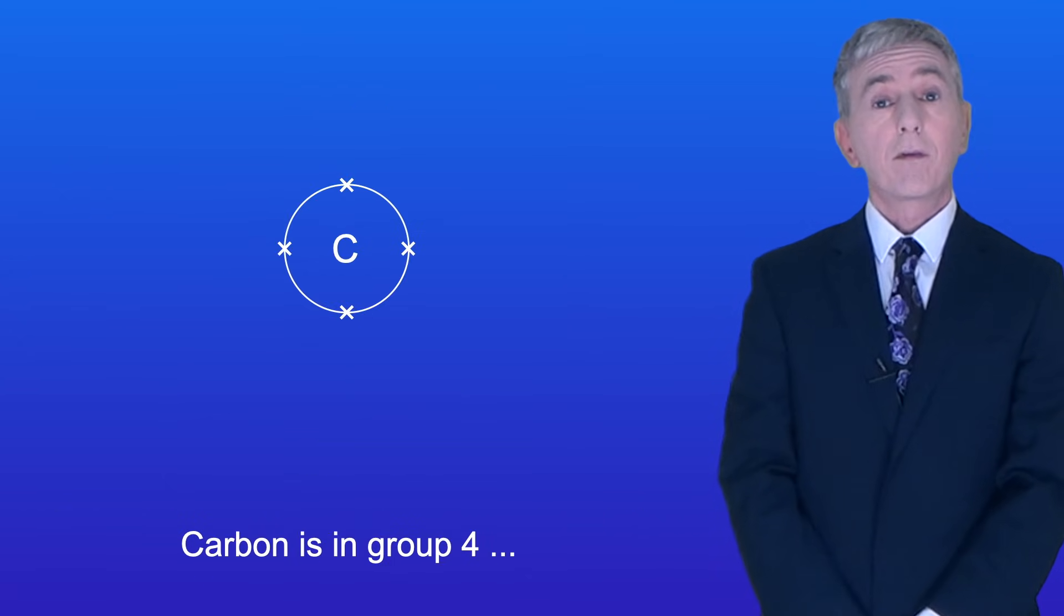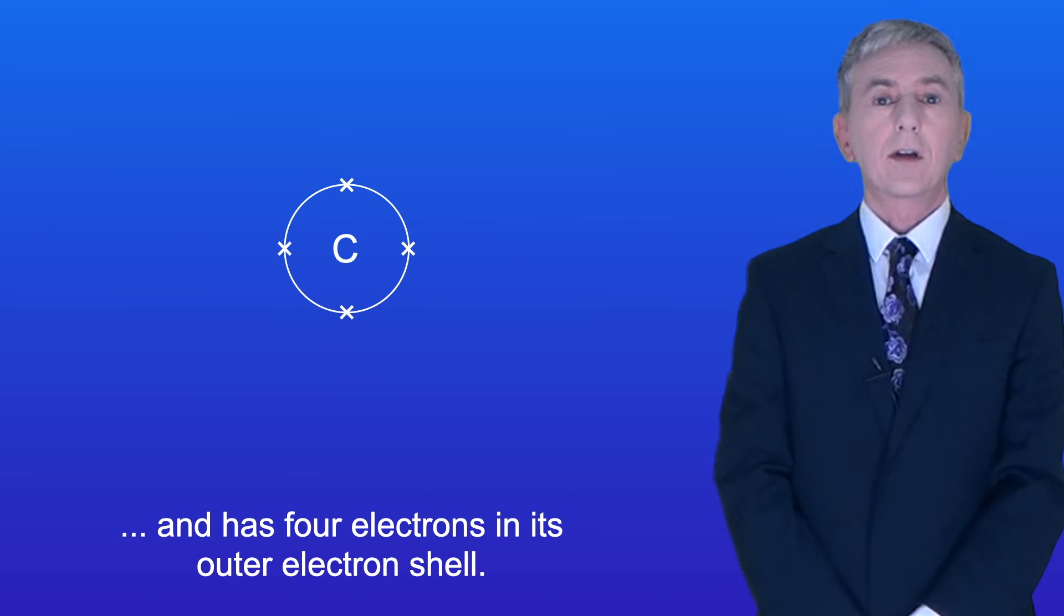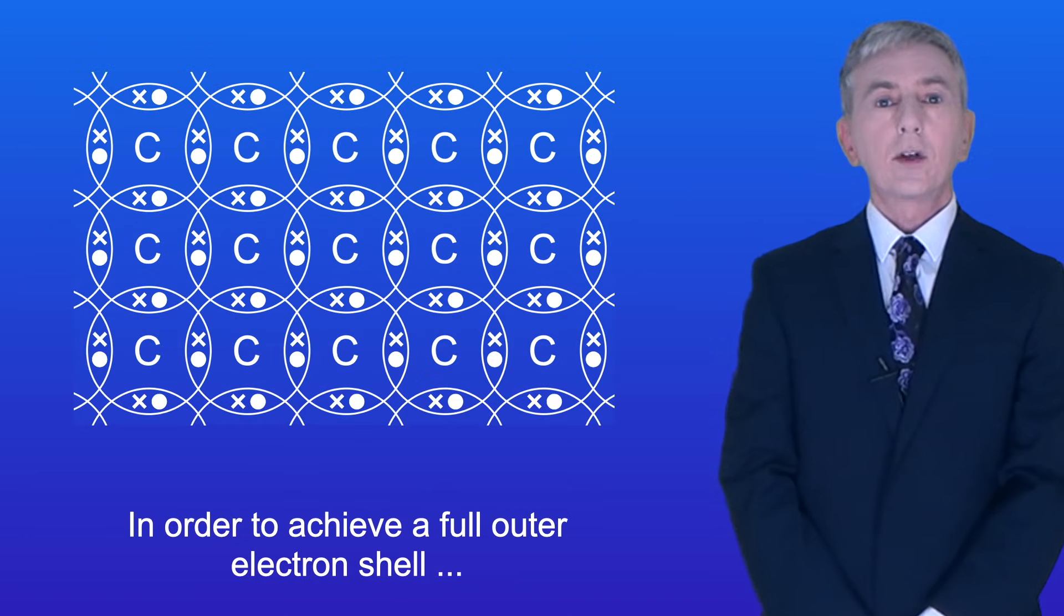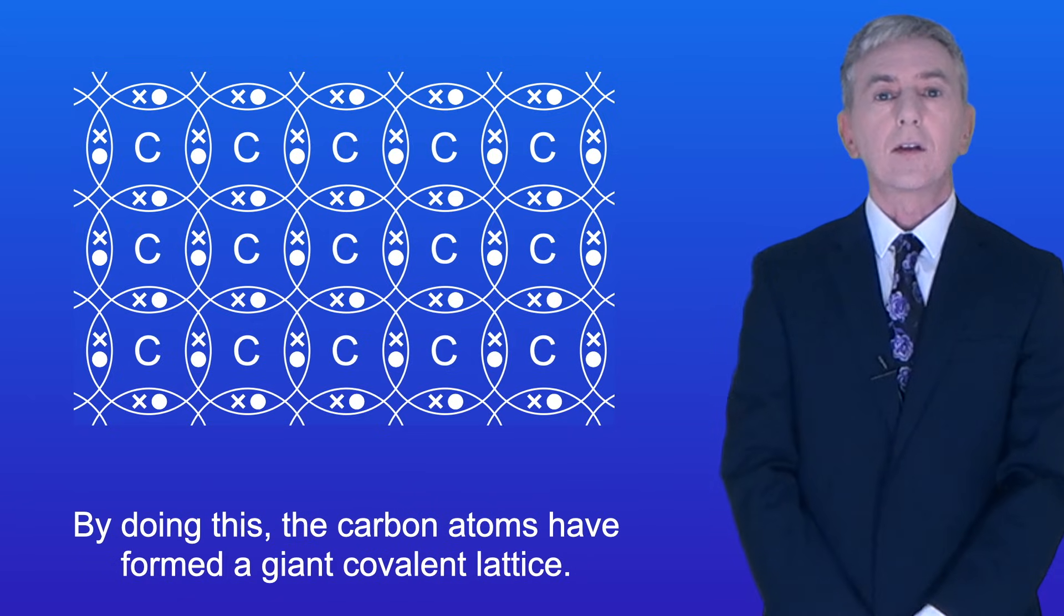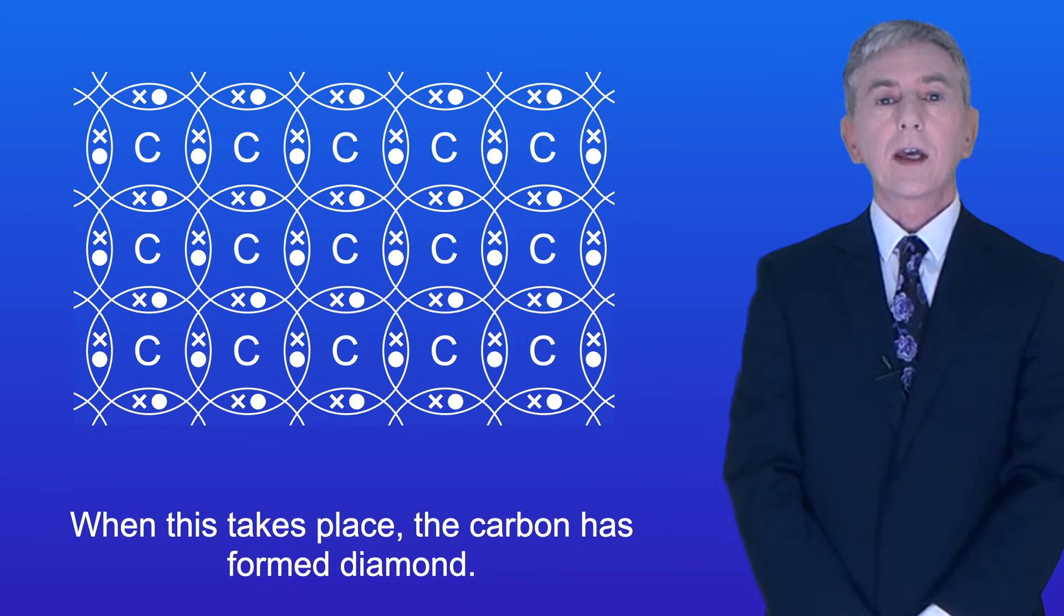Carbon is in group 4 and has 4 electrons in its outer electron shell. Now in order to achieve a full outer electron shell, carbon atoms can covalently bond to 4 other carbon atoms. By doing this, the carbon atoms have formed a giant covalent lattice. When this takes place, the carbon has formed diamond.